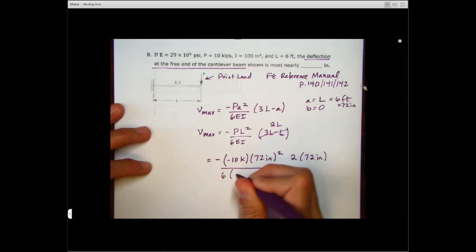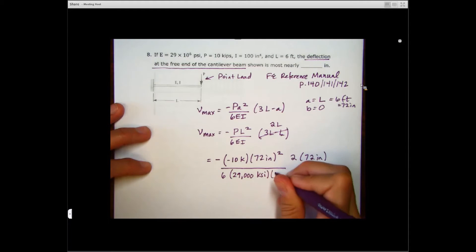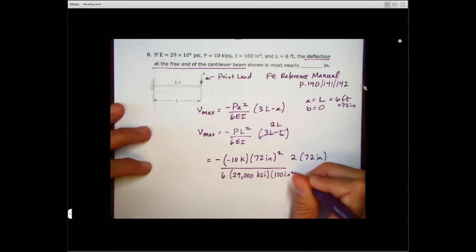And we have our 72 inches squared, and then also 2 times 72 inches. And then this is all over 6 times, I'm just going to use this in KSI, 29,000 ksi times 100 inches to the fourth.